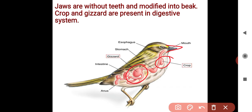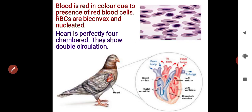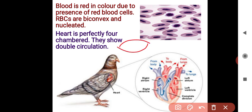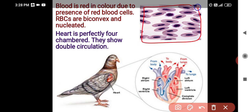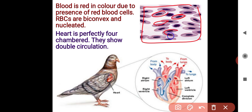There are two special parts in the digestive system: crop and gizzard. Blood is red in color due to the presence of red blood cells, meaning RBCs. These RBCs are biconvex and nucleated, meaning the nucleus is present at the center. This is the blood smear of the bird, showing RBCs which are nucleated and biconvex.